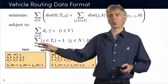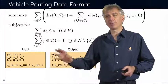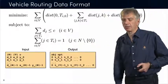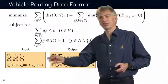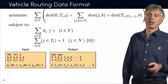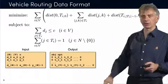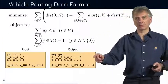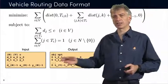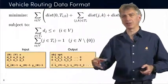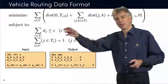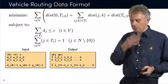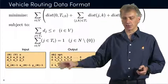The output we want for this particular problem is the value of the objective function — that's the first line, with an optimality flag and the value. And then we want the sequence of customers that are visited by every one of these vehicles. The first vehicle starts from 0, then visits a number of customers and goes back to 0. Same thing for the subsequent ones and for all the vehicles. That's the output that we need to check.